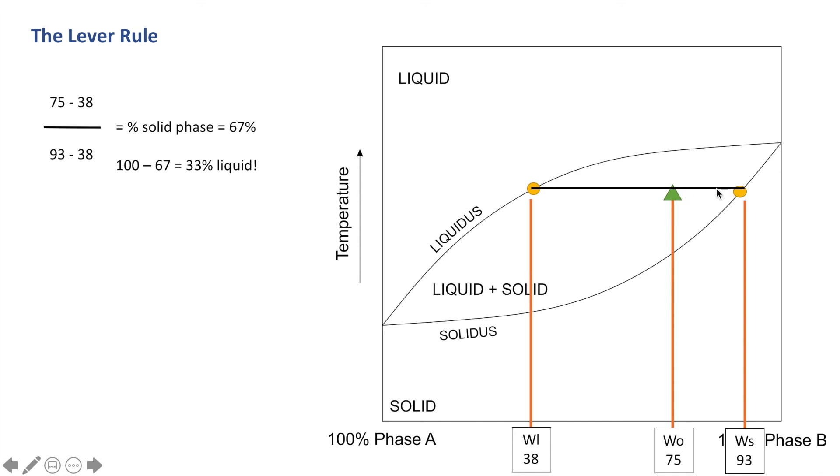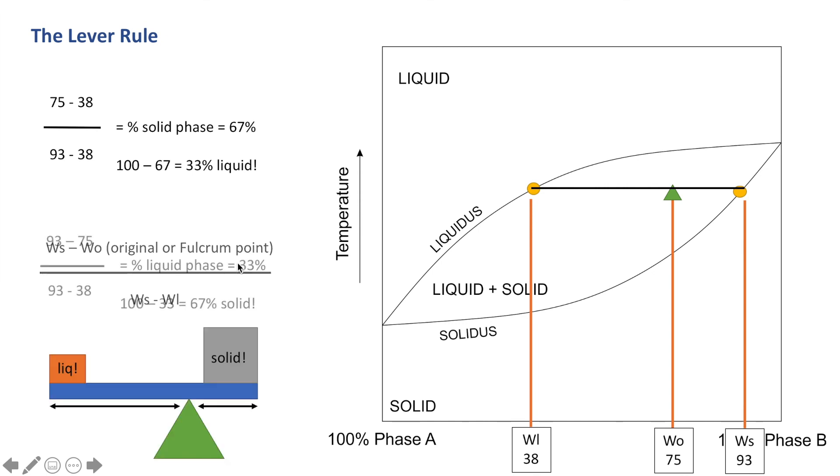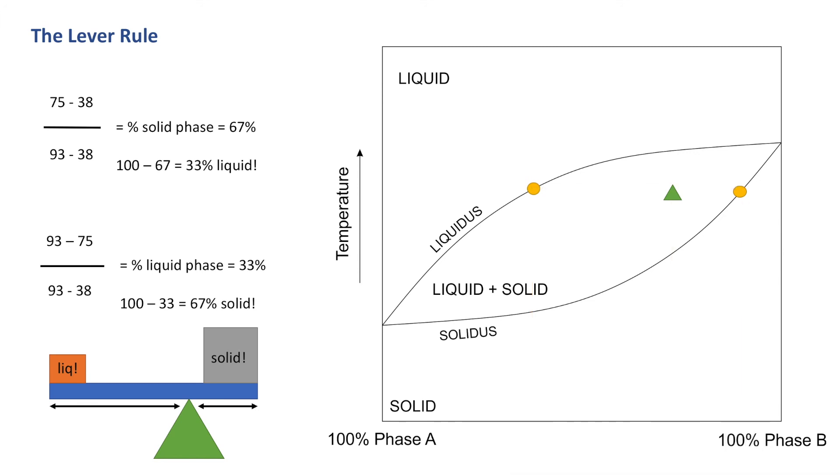Just for completion, if we do the other second equation that tells us the percentage of liquid, let's see if we got it right. We input that and there we go: 33% liquid, 100 minus 33 equals 67% solid. Here we're looking at our fulcrum point with a larger amount of solid balancing out a smaller amount of liquid. Then our system is going to evolve down until we now have 100% solid, then that's going to cool down.